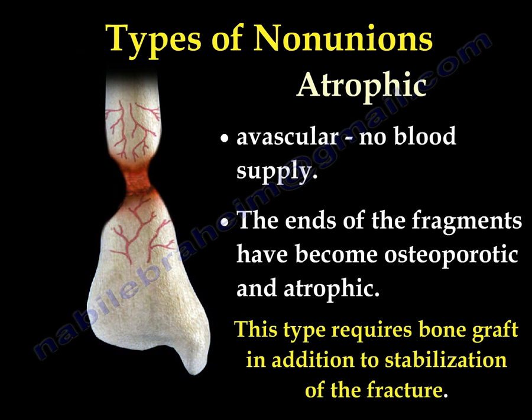The third type is Atrophic — this is a bad one. It is avascular with no blood supply. The ends of the fragments become osteoporotic and atrophic. This type requires bone graft in addition to stabilization of the fracture.